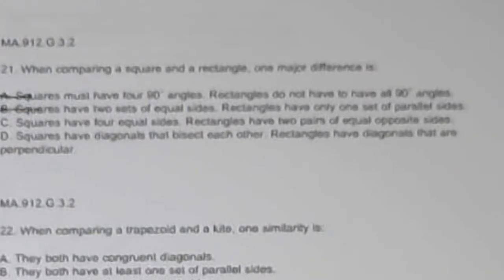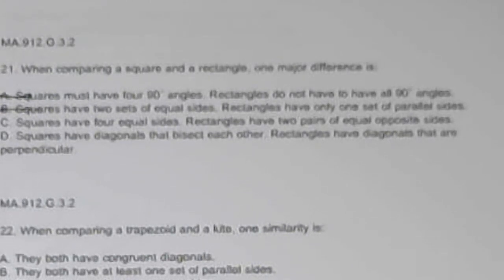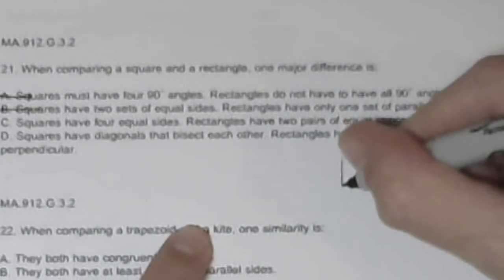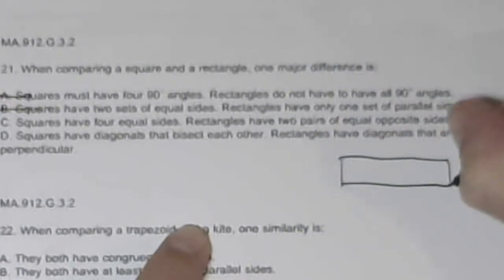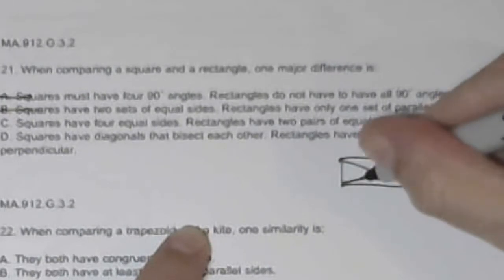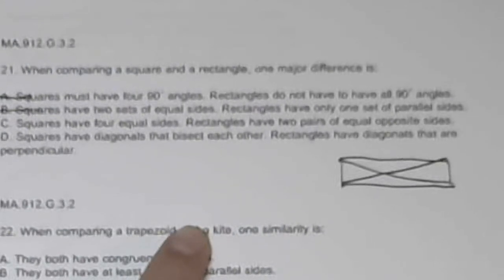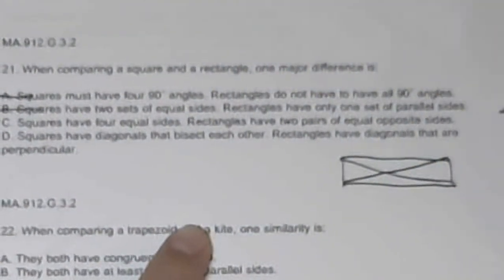Squares have four equal angles; rectangles have two pairs of equal opposite sides. Squares have diagonals that bisect each other. Rectangles have diagonals that are perpendicular? Well, I can draw a rectangle whose diagonals are not perpendicular — if they are, you have a rhombus. So if a rectangle had perpendicular diagonals, it would be a square. Therefore, choice C is the answer.